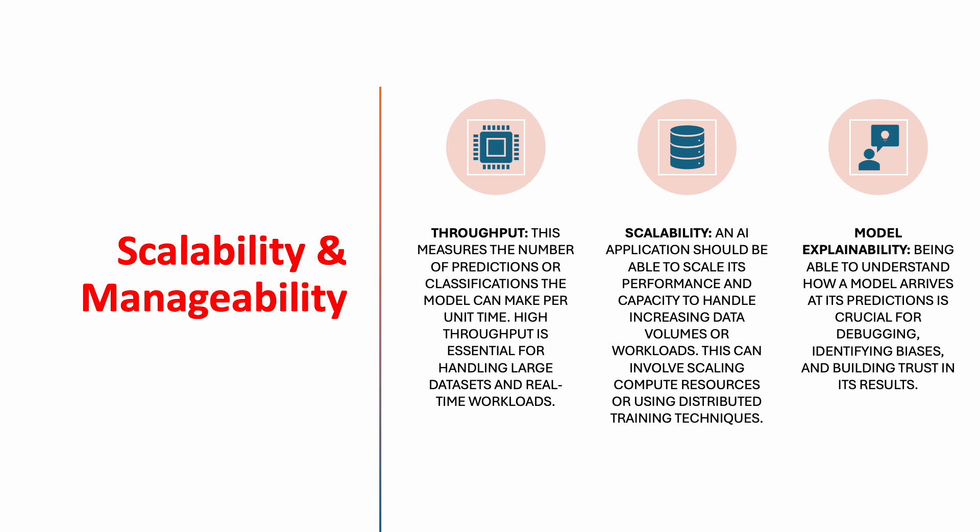The third category is scalability and manageability. Throughput measures the number of predictions or classifications the model can make per unit time — high throughput is essential for handling large datasets and real-time workloads. Scalability means an AI application should be able to scale its performance and capacity to handle increasing data volumes or workloads, which can involve scaling compute resources or using distributed training techniques. Model explainability refers to being able to understand how a model arrives at its predictions, which is crucial for debugging, identifying bias, and building trust in the end results.